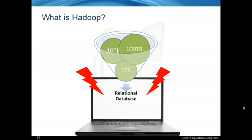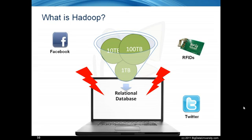Moreover, you are now asked to feed your application with unstructured data coming from sources like Facebook, Twitter, RFID readers, sensors and so on. Your management wants to derive information from both the relational data and the unstructured data, and wants this information as soon as possible. What should you do?